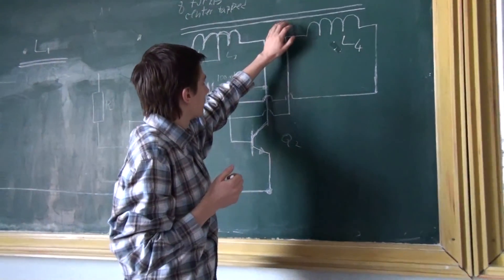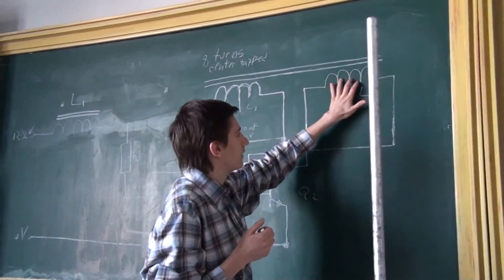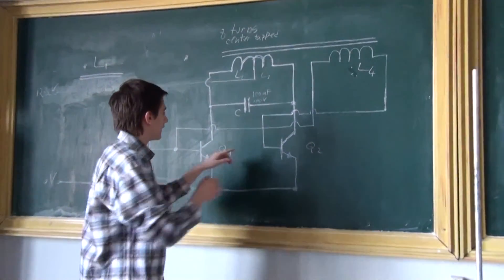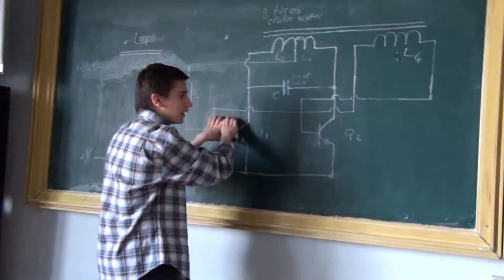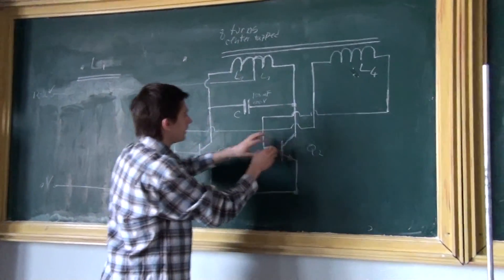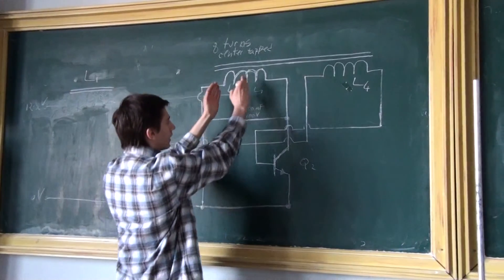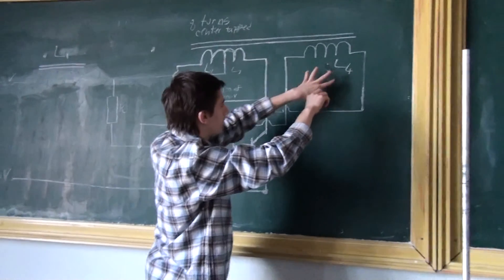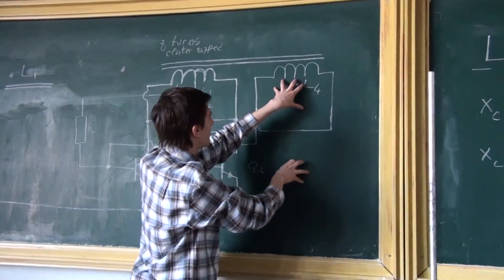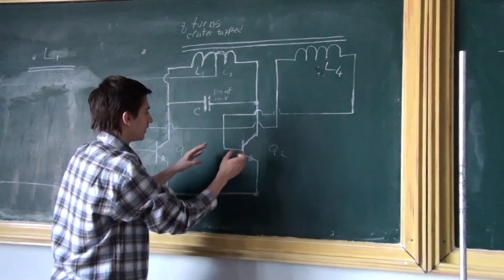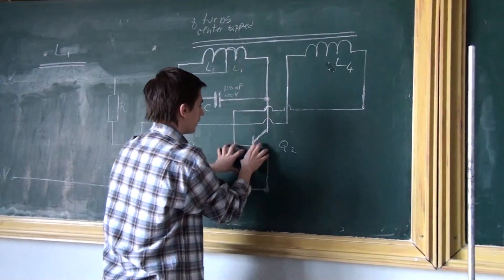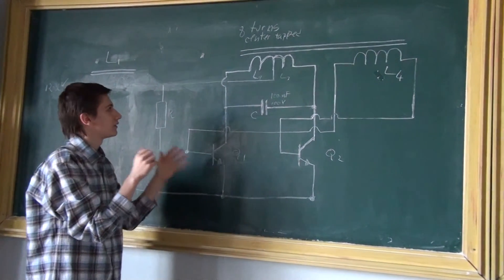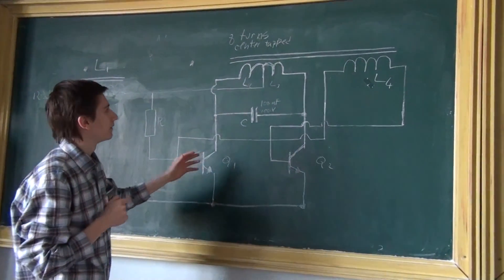This flux will activate the flyback coil, which will send a current to the gate, closing this one and opening the other. When this happens, the current will now flow from here to here, making a reverse flux. This also activates the flyback coil, which in turn closes the first gate and opens this gate.